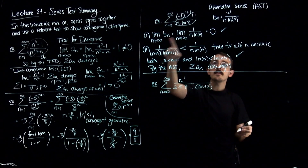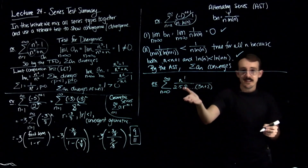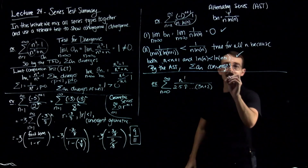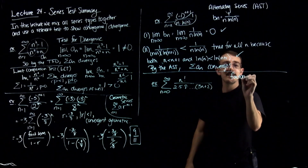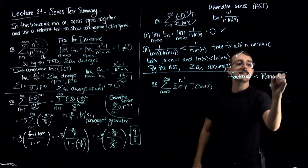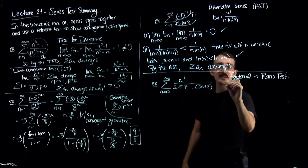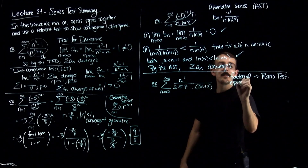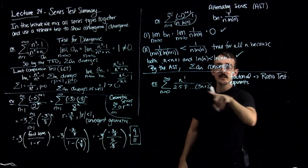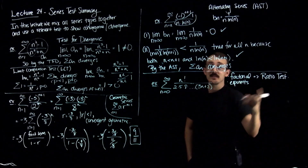The limit of b sub n goes to 0 and it is indeed a decreasing function. Now let's look at the next example. As soon as I see a factorial, in my mind it immediately goes to the ratio test. Factorials are a key indicator for the ratio test, and another one that's popular is exponents, or if you see these long-looking products of numbers in some pattern — that's a good indication to use the ratio test.